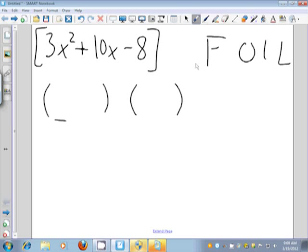What you want to do with your first numbers is you want to be able to multiply them together to give you this term. And the second numbers you want to be able to multiply together to give you this term.